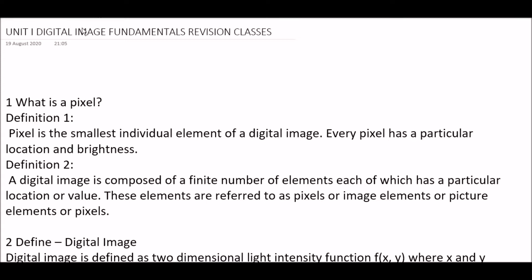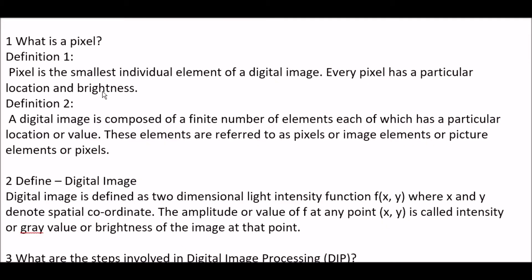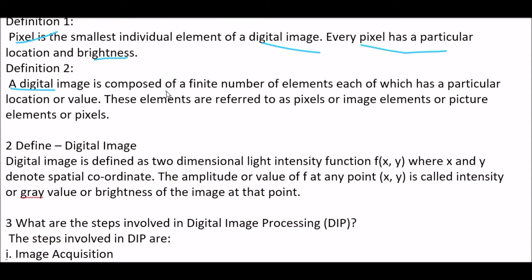Your first question is, what is a pixel? Here, two definitions of pixels are available. First one, pixel is the smallest individual element of a digital image. Every pixel has a particular location and brightness. Second type of definition is, a digital image is composed of a finite number of elements, each of which has a particular location or value. These elements are referred to as pixels or image elements or picture elements.